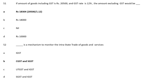If the amount of goods including GST is Rs 20,500 and GST rate is 12%, the amount excluding GST would be: Option A: 18,304; Option B: 18,000; Option C: needs; Option D: 10,000. The correct answer is Option A, 18,304.